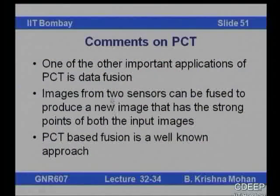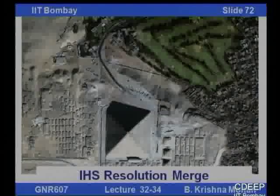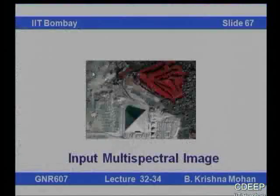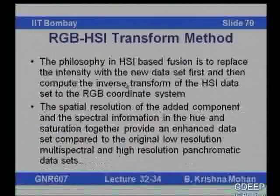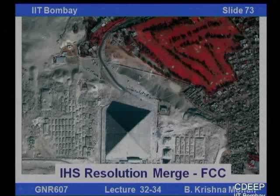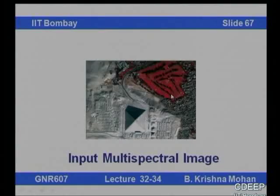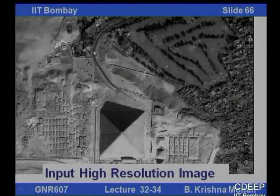We will take up the discussion of data fusion in the next class, where different kinds of transformations like color transform and principal component transform can be used to merge different data sets. For instance, you can merge a high-resolution panchromatic image with a low-resolution multispectral image to get a high-resolution multispectral image. This is pan-sharpening, which comes under data fusion, and we will look at one or two methods in this course.